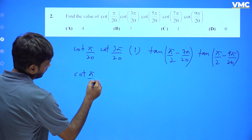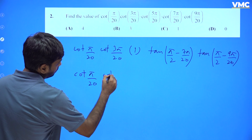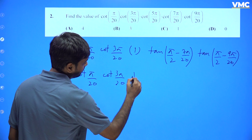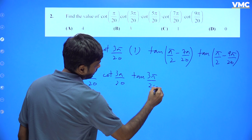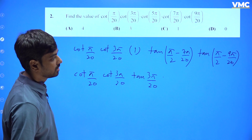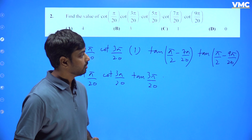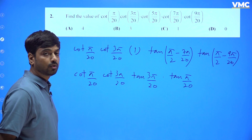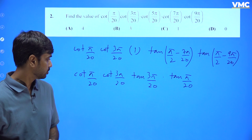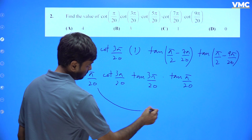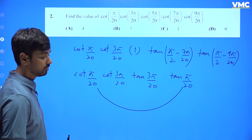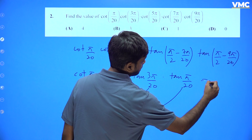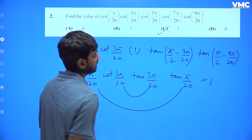Similarly, cot(9π/20) can be written as tan(π/2 − 9π/20). When you simplify π/2 − 7π/20, you get tan(3π/20), and π/2 − 9π/20 gives tan(π/20). Now tan θ · cot θ = 1, so multiplying the fourth and first gives 1, and from the second and third also gives 1. So 1 × 1 = 1. The answer for this question is 1. Option C is correct.